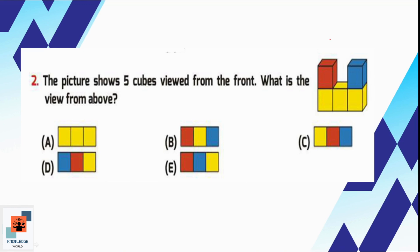Question number 2, the picture shows 5 cubes viewed from the front. What is the view from above? When we look at it from above, we will see one red square, then one yellow square, and a blue square will be at the end. So option B is the correct representation of the given shape.